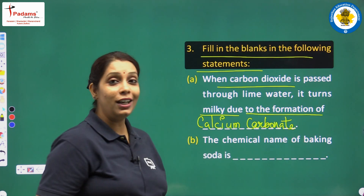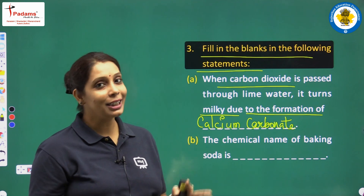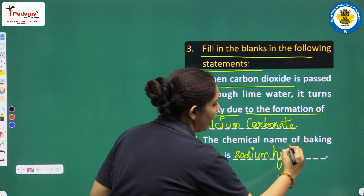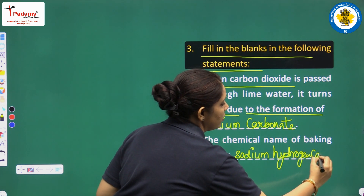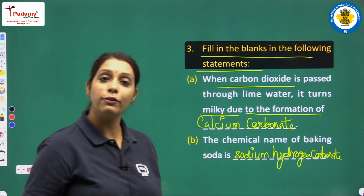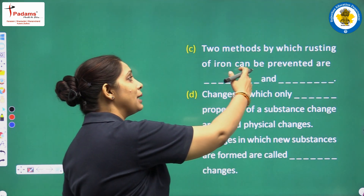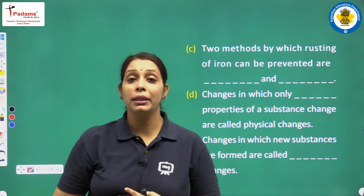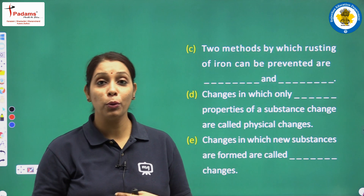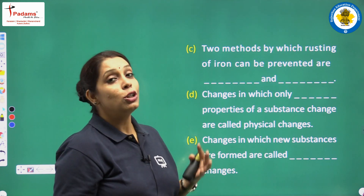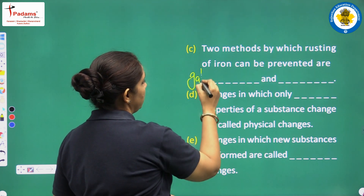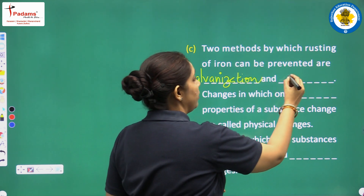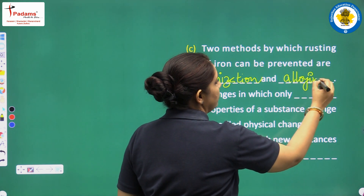Next blank: the chemical name of baking soda is sodium hydrogen carbonate. So we will write here: sodium hydrogen carbonate. Next: the two methods by which rusting of iron can be prevented. We have studied blasting coating, deposition of chromium, galvanization, and alloying. We will write here: first, galvanization, and second, alloying.